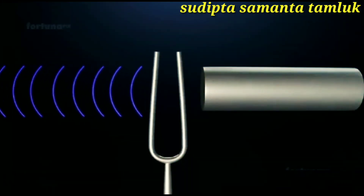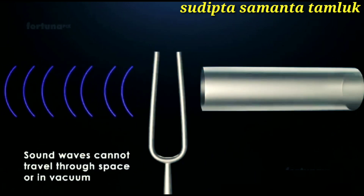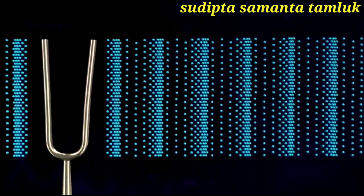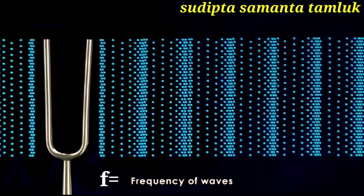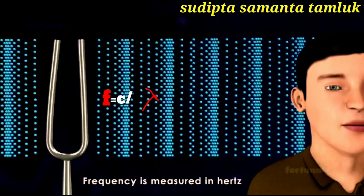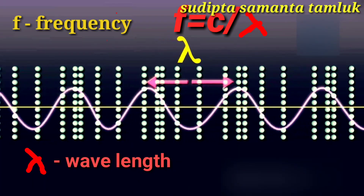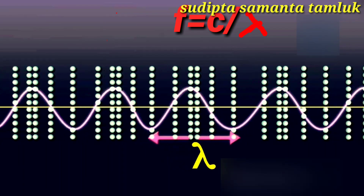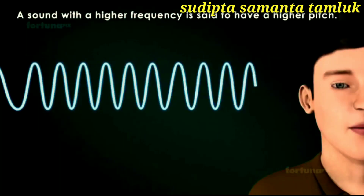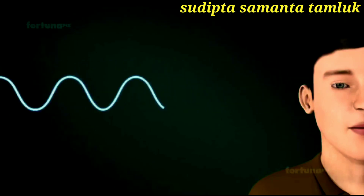The vacuum of outer space has no molecules, so sound waves cannot travel through space or in a vacuum. The number of complete back and forth vibrations of a particle per unit of time is the frequency of a wave — that is, the number of waves reaching an observer every second. Frequency is measured in hertz or cycles per second. Wavelength is the distance between two consecutive compressions or rarefactions. A sound with a higher frequency has a high pitch, while a low frequency sound has a low pitch.